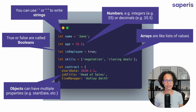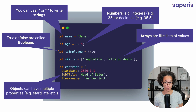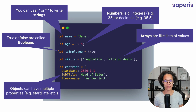Then numbers — we can have integers, like 35, or decimals, 35.5. Note that you do not need quotation marks for that. That's very important — it distinguishes numbers from strings. There's going to be a quiz at the end of the video about that.